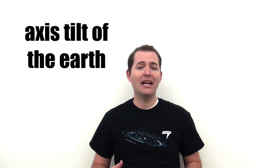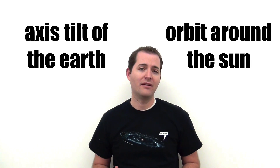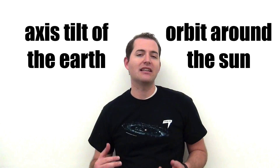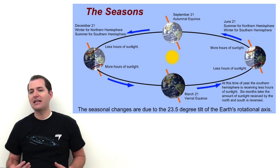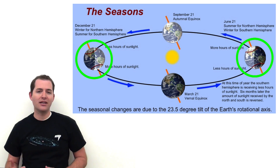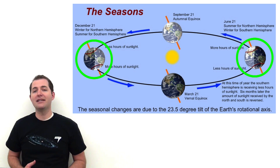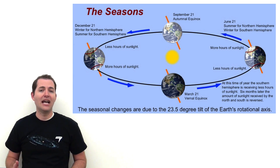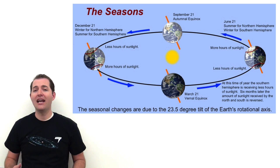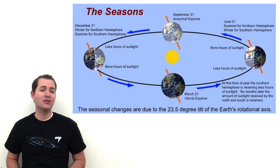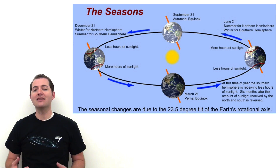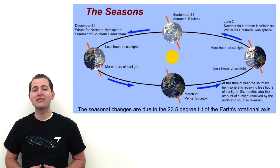There are also a few other special situations caused by both the axis tilt and the Earth's orbit around the Sun. These two properties cause four specific events known as solstices and equinoxes. Solstices happen twice a year — one in summer and one in winter. The summer solstice usually takes place around July 21st and marks the longest day of the year, when the Sun is highest in the sky. The winter solstice, around December 21st, marks the shortest day, when the Sun is lowest in the sky.